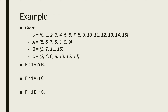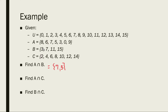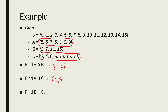Now we look at the same three examples with intersections. Remember, intersection means we write down the elements the two sets have in common. For A intersect B, I look at both sets and find they both have a 7 and a 3, so the intersection contains 7 and 3. For A intersect C, looking at both sets, they both have a 6 and an 8, so the intersection of those two sets contains 6 and 8.